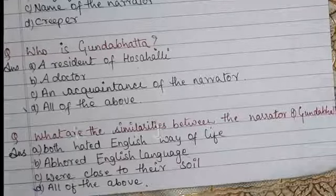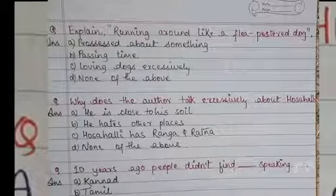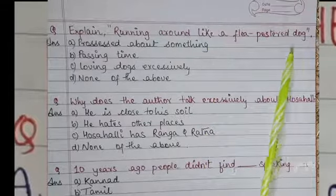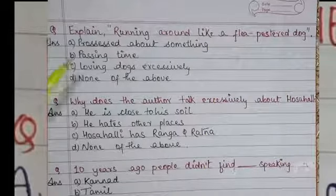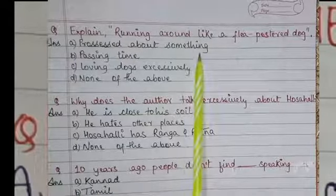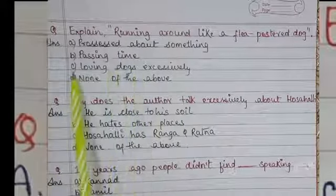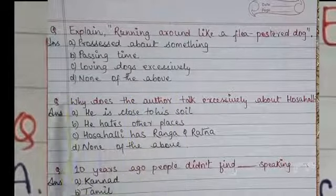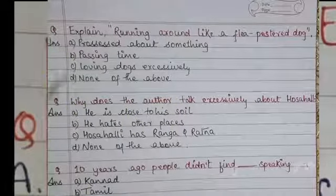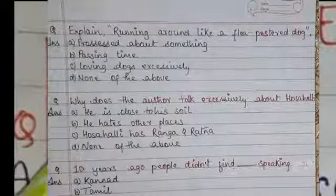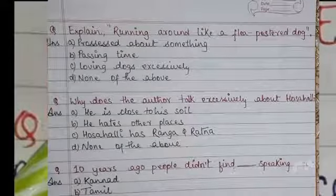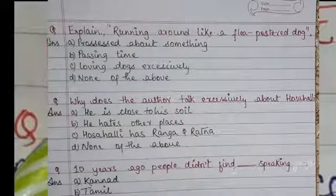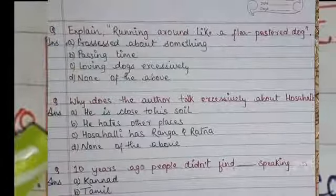Next question: Explain 'running around like a flea-pasted dog.' What does this line mean? Option A: Possessed about something, Option B: Passing time, Option C: Loving dogs excessively, Option D: None of the above. The right answer is Option A — possessed about something, meaning running madly after something, to become maniacal for something.